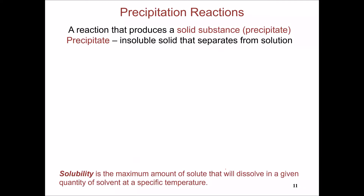We'll talk about some specific types of reactions and start with precipitation reactions. A precipitation reaction is any reaction that produces a precipitate — a solid substance — out of the reaction medium. A precipitate means an insoluble solid substance that separates from the solution of the reaction.